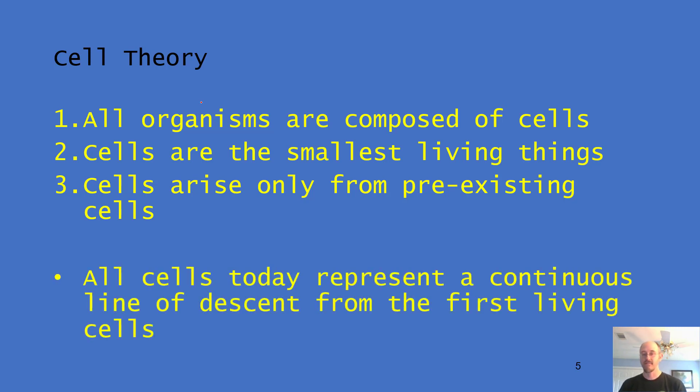And then we've added to that since the time of Darwin, this last bullet point. Cells today represent a continuous line of descent from the first living cells. So life started billions of years ago through a process known as abiogenesis. That means life from non-life. And since then, all cells have arisen from those pre-existing cells.